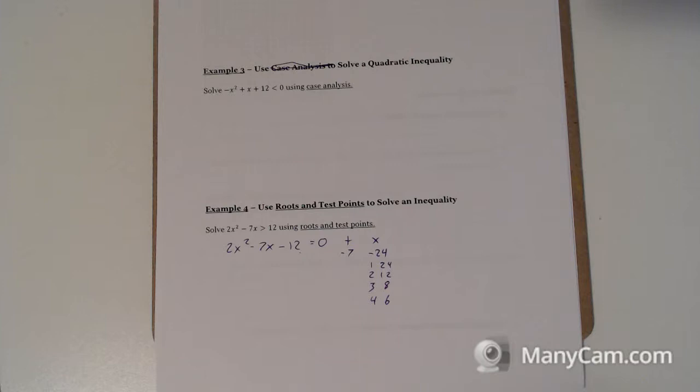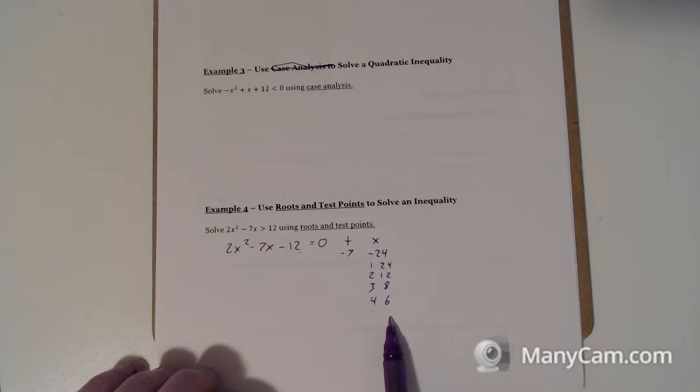Two numbers that multiply to negative 24 and add to negative 7. Actually, I don't see any of these things. Did I write this down all right? Let me just check the answer here. Yep, it won't factor actually. This is an annoying one. So we need to find the roots but this won't factor, so we have to use the quadratic formula.